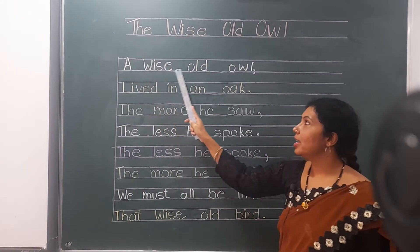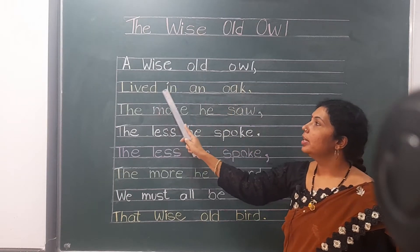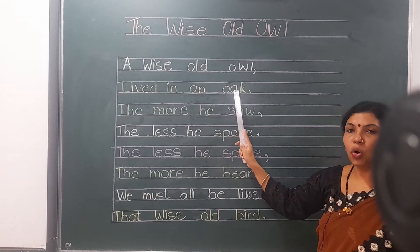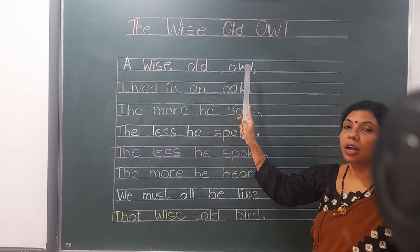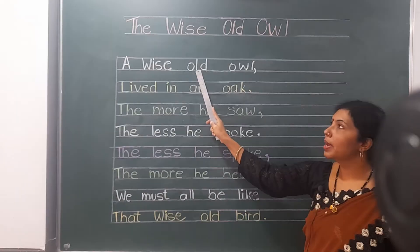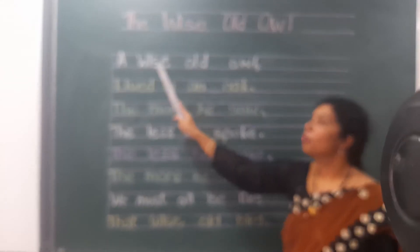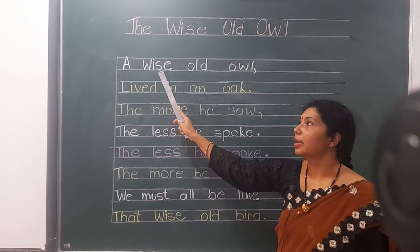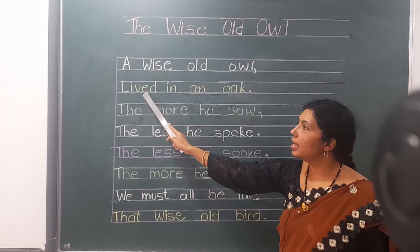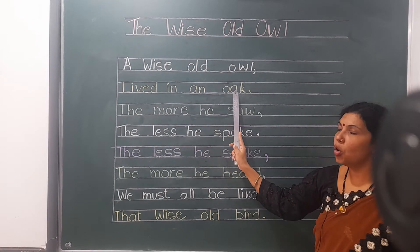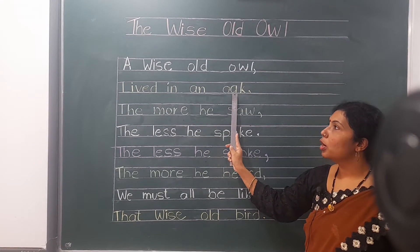A wise old owl lived in an oak. Ek buddhiman buddha ullu — old means buddha, owl means ullu, wise means buddhiman. Ek buddhiman buddha ullu lived in an oak. Lived means rehta tha, oak mein — lived in an oak.